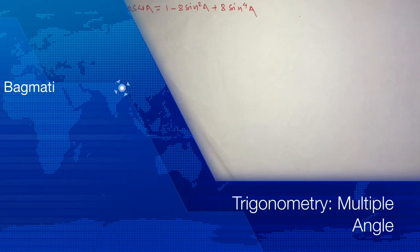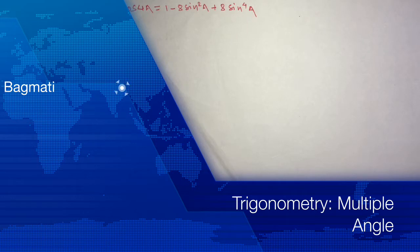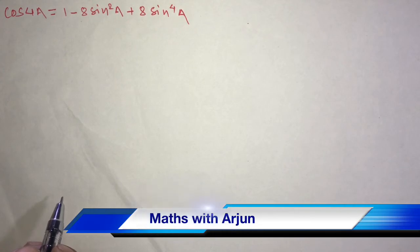Hello, namaskar, welcome. In this video today we are here with a new trigonometrical problem. Our question is: cos 4a equals 1 minus 8 sine squared a plus 8 sine to the 4th a. This is our question. Let's start.